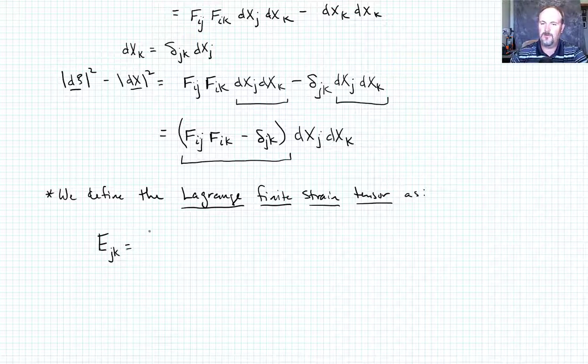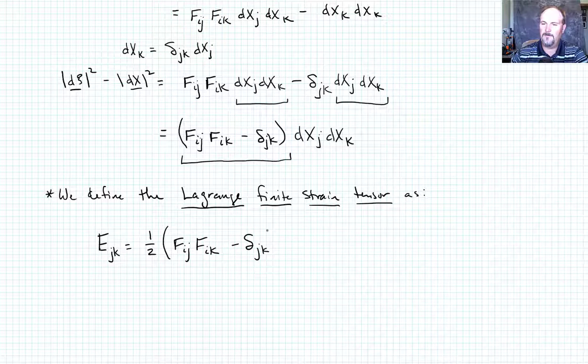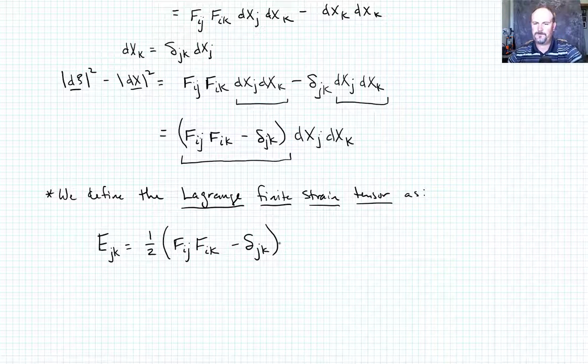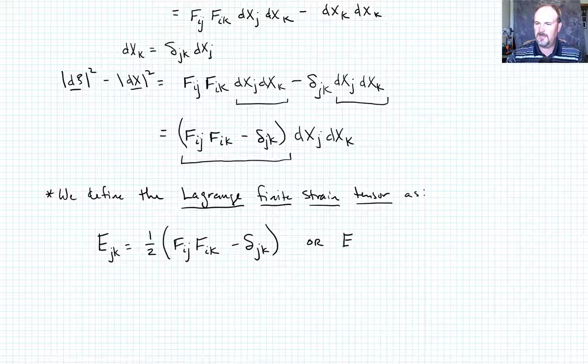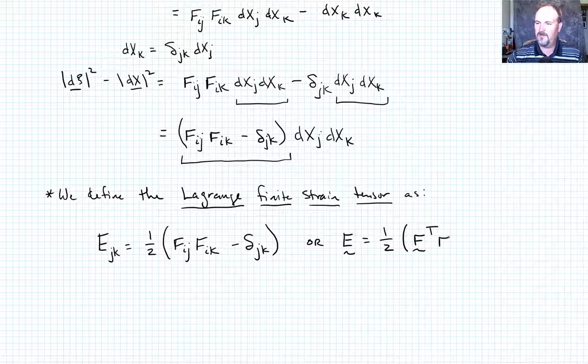It's going to be equal to one half F_ij F_ik minus δ_jk. Okay? E_jk. So we could also write that in direct notation if you like, and say that that's the tensor E equals one half F^T times F minus the identity matrix I.